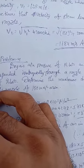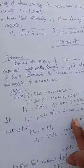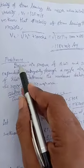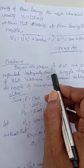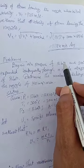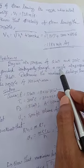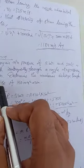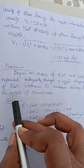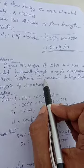We need to find the nozzle velocity and maximum discharge through the nozzle. The problem is: dry air at a pressure of 12 bar and 300 degrees Celsius is expanded isentropically through a nozzle at a pressure of 2 bar. Determine the maximum discharge through the nozzle, given a nozzle area of 150 mm square.